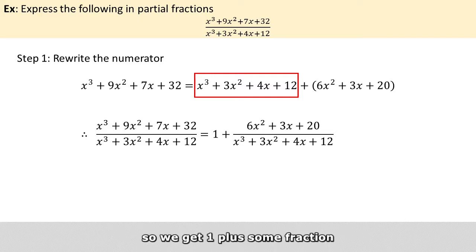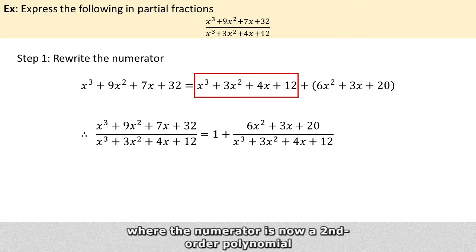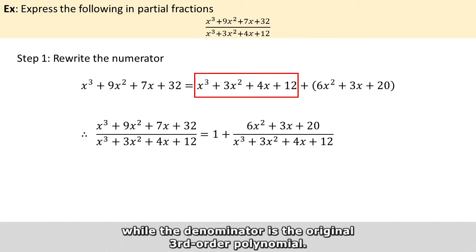So we get 1 plus some fraction where the numerator is now a second order polynomial while the denominator is the original third order polynomial.